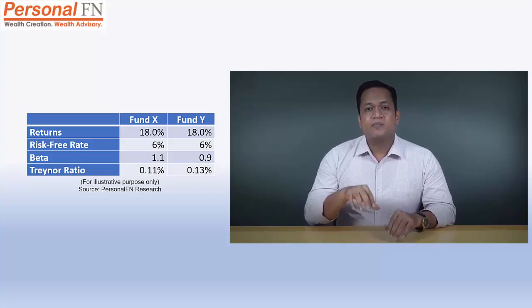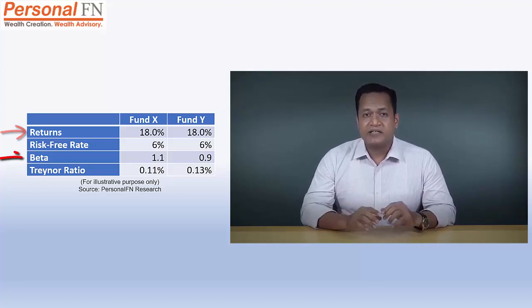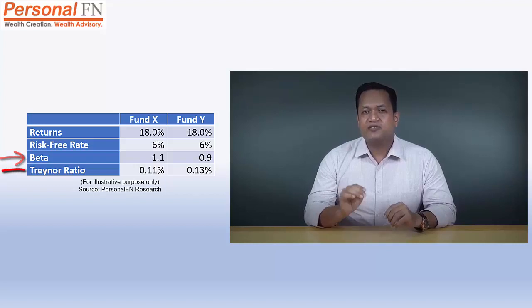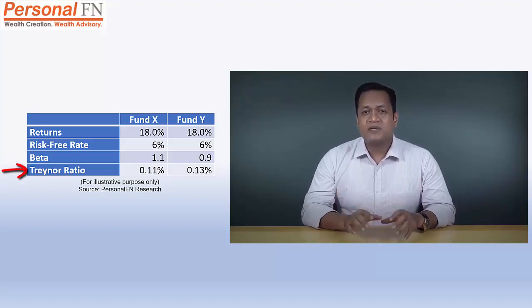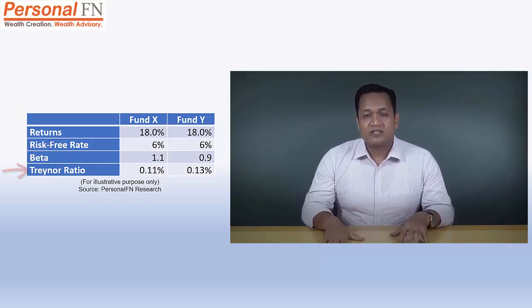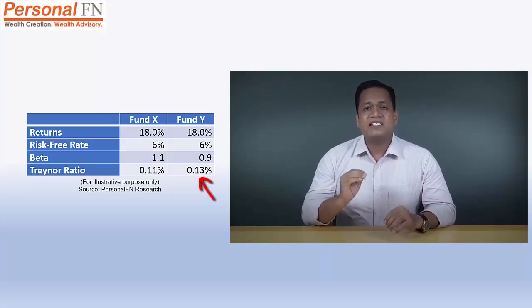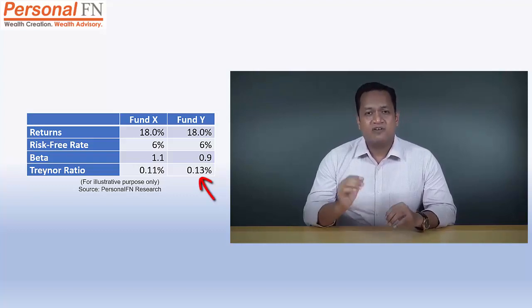As mutual funds aim to outperform the underlying market index, the Treynor ratio can be a useful ratio for assessing the scheme's performance vis-à-vis its benchmark. In this table, both fund X and fund Y have generated similar returns of 18%. However, fund X has a higher beta compared to fund Y, due to which the Treynor ratio is lower than fund Y's. This means the returns of fund X have come from investing in a portfolio of highly volatile stocks, whereas fund Y has generated similar returns with a portfolio of less volatile stocks. Like other risk-adjusted return ratios, a fund with a higher Treynor ratio can be considered better as it has generated higher returns for each level of risk taken. This ratio also helps you compare different funds and shortlist the one suitable for your risk profile.